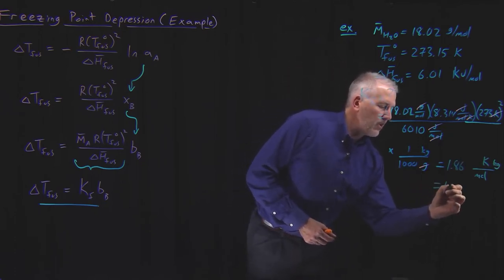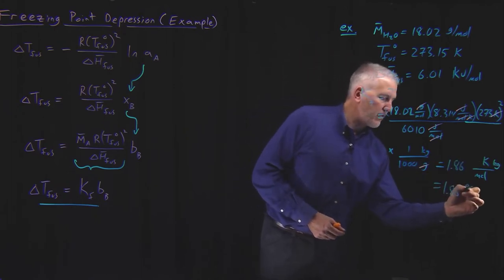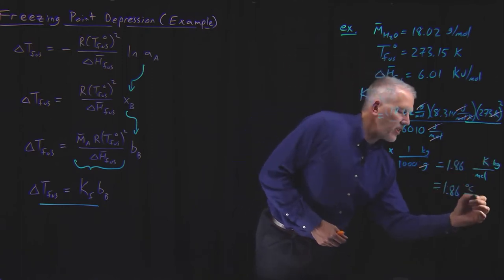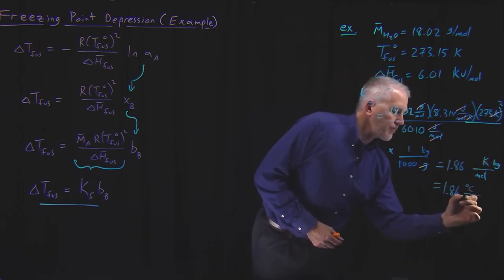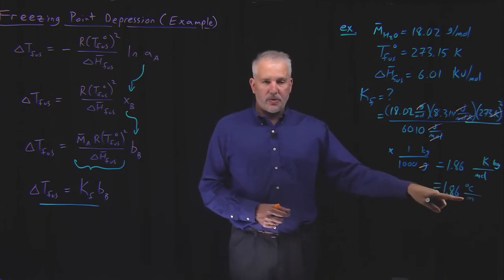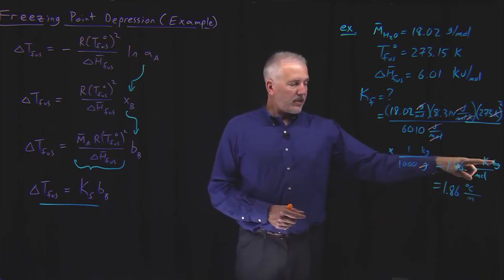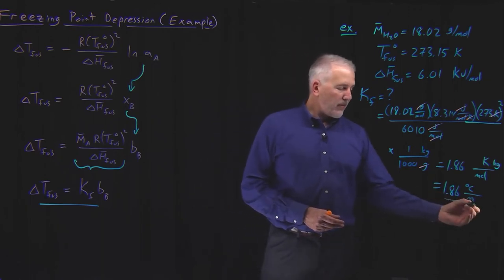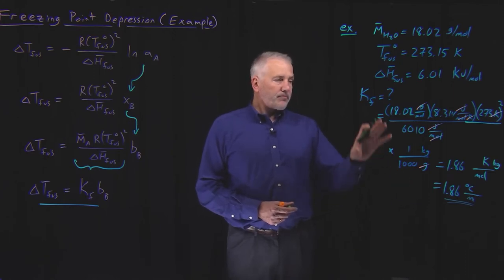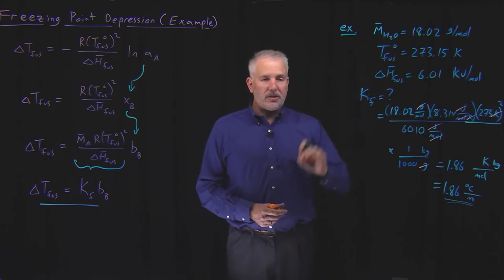Since a shift in the freezing point of one Kelvin is the same as a shift of one degree Celsius, and moles per kilogram in the denominator is molal, the freezing point depression constant for water works out to be 1.86 degrees Celsius per molal — the same as 1.86 Kelvin·kilogram per mole. That's a number you may have used before, and now we see where it comes from: it comes from the various properties of water as a solvent.